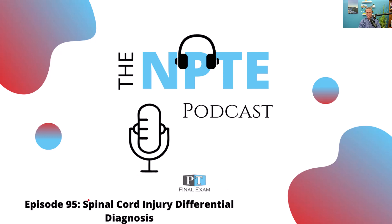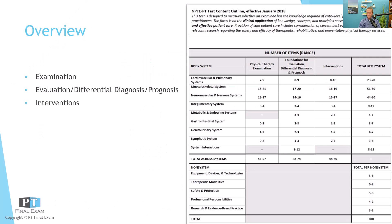Today we'll be talking through a practice question related to spinal cord injury. On the NPTE, there are a bunch of questions related to the spinal cord, neuromuscular, and neuro in general. You can expect somewhere around 50 questions related to the neuromuscular and nervous system. We'll be talking about spinal cord injuries and how to do some differential diagnosis.